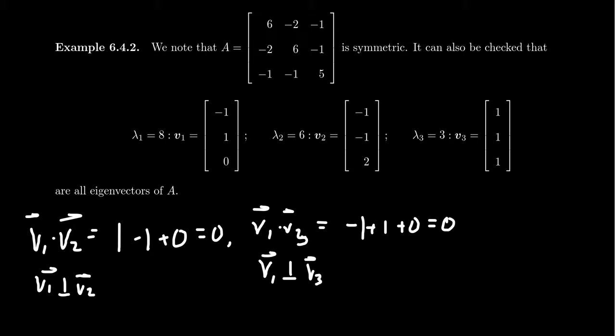And then finally, if we take V2 dot V3, make sure you get it right this time, you'll end up with negative 1 minus 1 plus 2. That's equal to 0. Thus showing us that V2 is orthogonal to V3. So we can see that these eigenvectors are, in fact, orthogonal with each other.